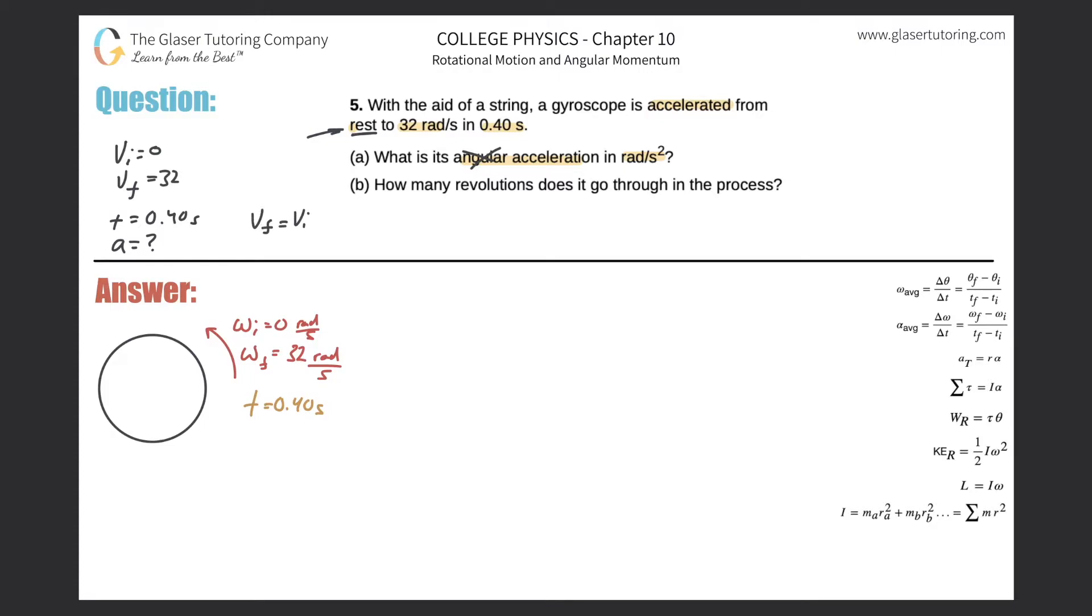This one does: v_f equals v_i plus at. And all I got to do is solve this for a. When thinking in terms of rotational kinematics, you can use this as your linear analog.